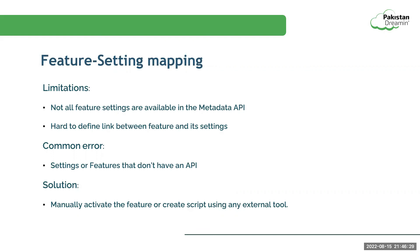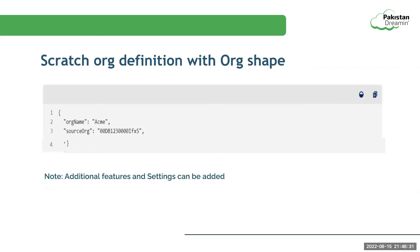But when we are using org shape for scratch org creation, the project definition JSON file is simplified. The source org takes care of the edition, license, limits, and settings of the scratch org — there is no need to mention the edition in the JSON file separately. Features are additive in nature; you can include more features not present in the source org metadata, but you can't remove features already present in the source org. Settings can override, but if needed you can enable or disable them once a scratch org is created. This makes it easy to create a scratch org using the org shape.